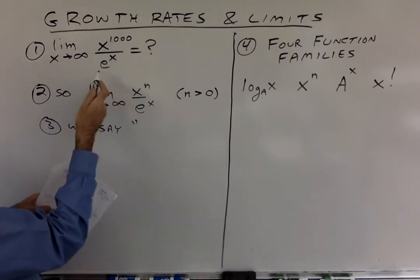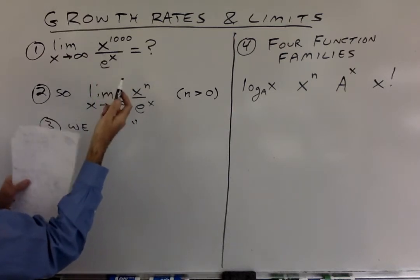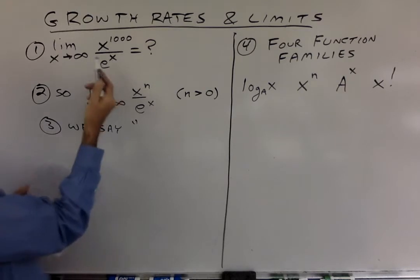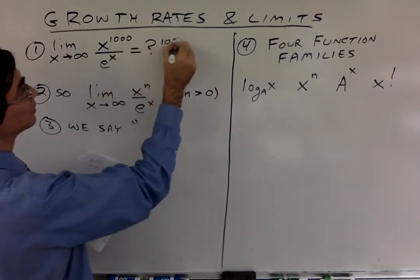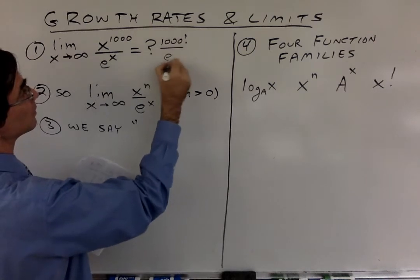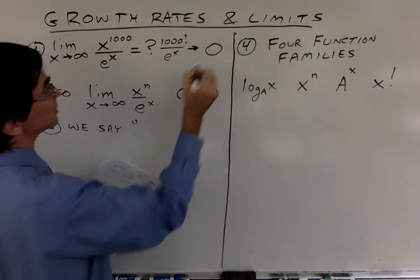Look at this limit here. You could do L'Hopital too. You'd have to do L'Hopital a thousand times. So the bottom stays unchanged and the top turns into a thousand factorial. So it's a constant over e to the x. And that means since x is getting bigger and bigger, this limit is zero.